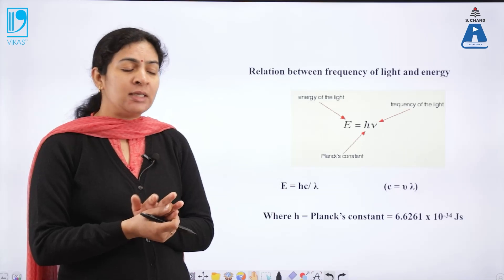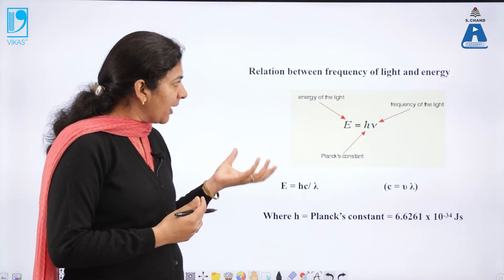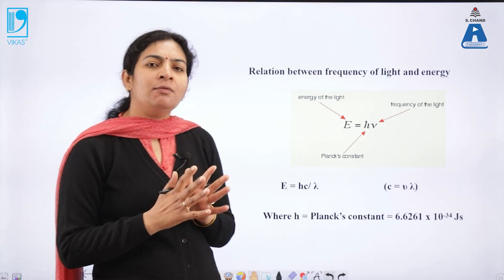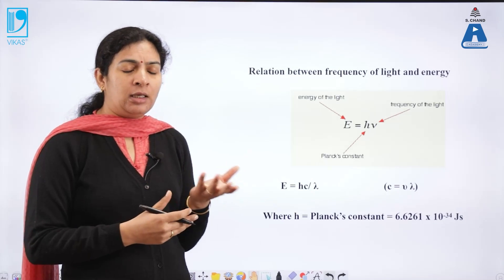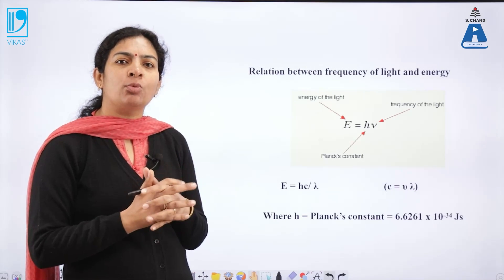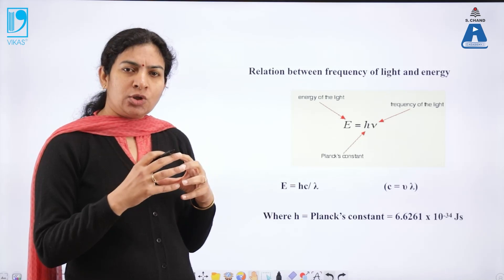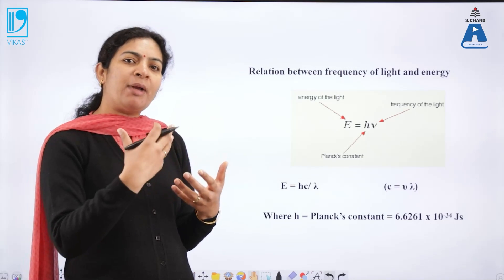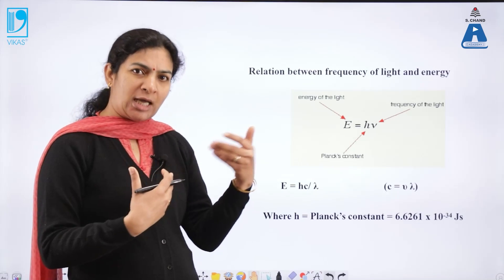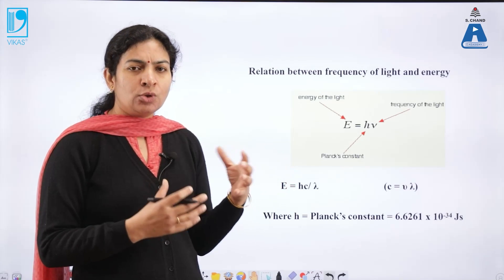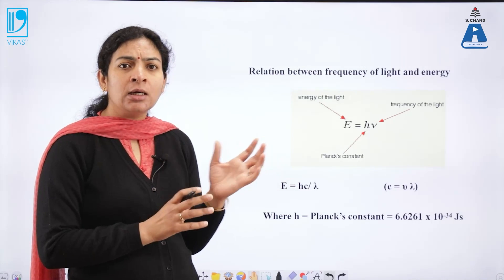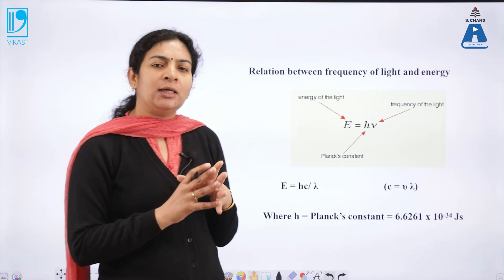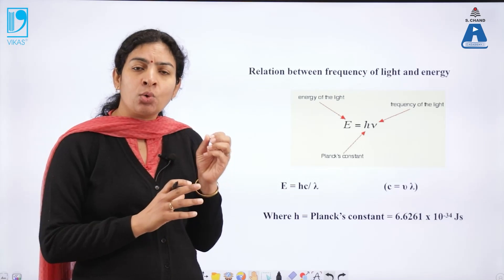It now becomes mandatory to understand what electromagnetic radiation is. Though we have all learned this in school as well, electromagnetic radiation is nothing but the electric and magnetic field travelling perpendicular to each other and also to the direction of propagation. This is how we define electromagnetic radiation — it has both an electric as well as a magnetic component, and this electromagnetic radiation plays an important role in spectroscopy.